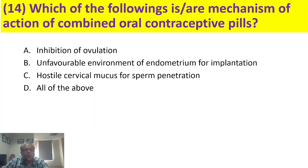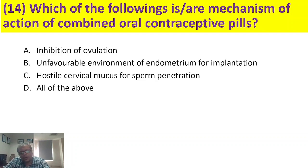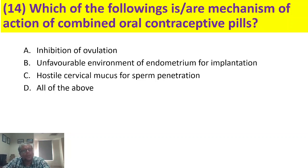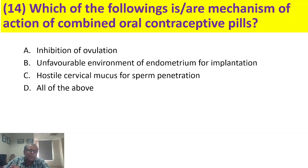Which of the following is or are mechanisms of action of combined oral contraceptive pills? The efficacy of OC pills is more than 99% because they act at different levels. First, they inhibit the mid-cycle LH surge, preventing ovulation. Even if ovulation occurs, uterotubal contractions prevent the ovum from reaching its destination. Cervical mucus becomes thick, making it hostile to sperm penetration. And even if all these fail, an unfavorable endometrial environment prevents implantation. The answer is all of the above.